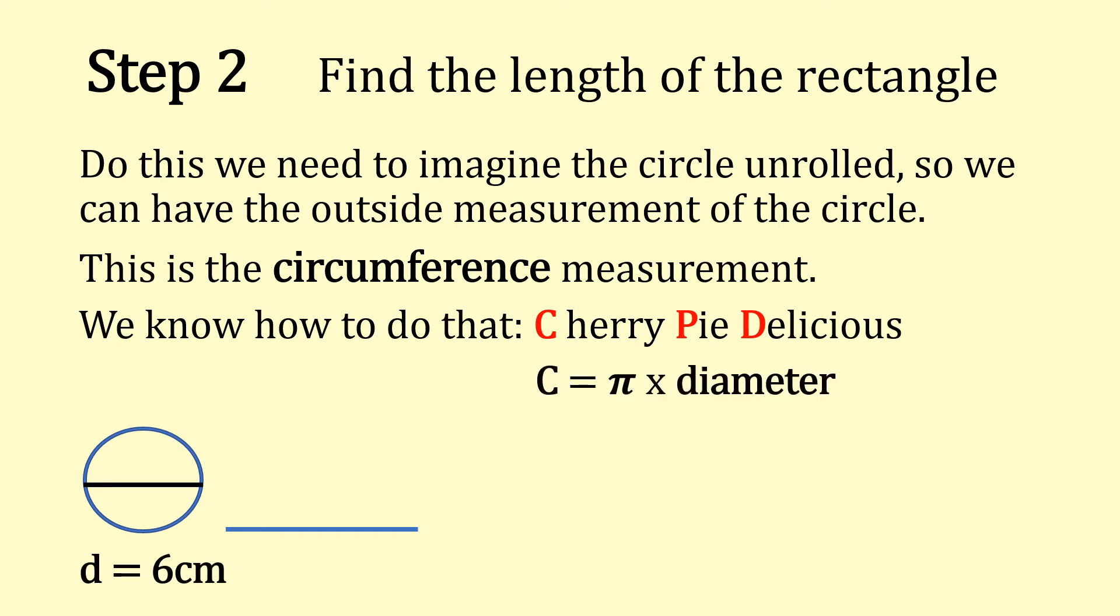So we know how to do that. Cherry pie delicious, which gives us C equals π times diameter. So π times our diameter gives us 18.85 centimeters squared.